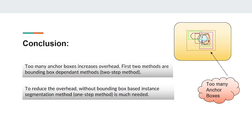When there are too many objects in a particular location, using the bounding box approach for instance segmentation results in too many anchor boxes in the same area. This is computationally inefficient, and due to the high number of anchor boxes, classification also cannot be done properly. To remove this issue, we should focus on efficient one-step approaches which do not need bounding boxes for instance segmentation tasks. We will also try to build such an efficient one-step instance model in the future.